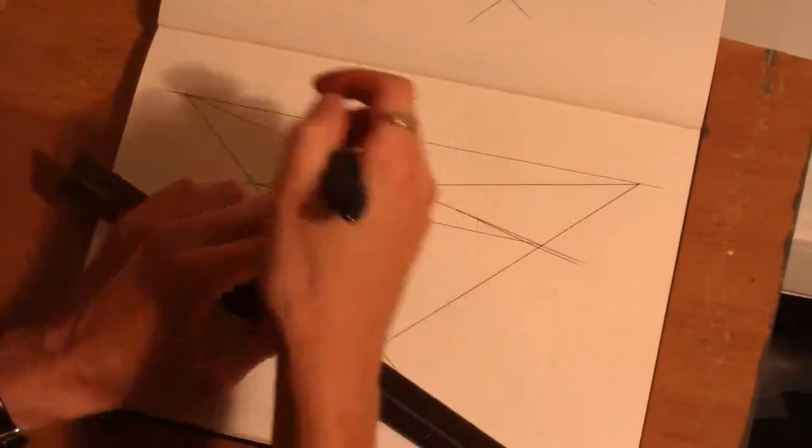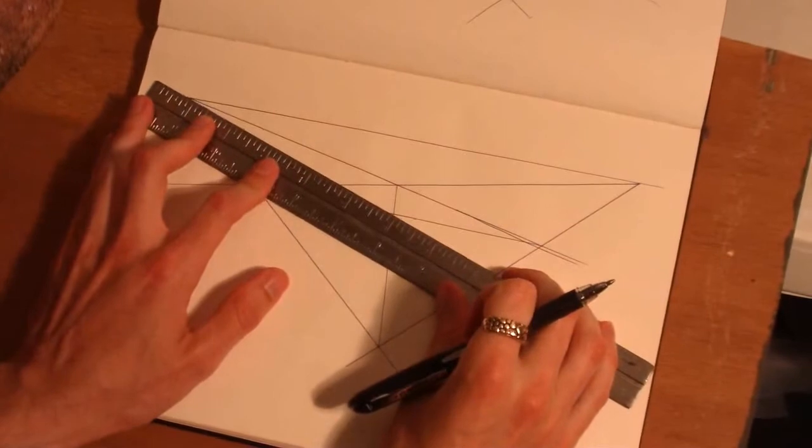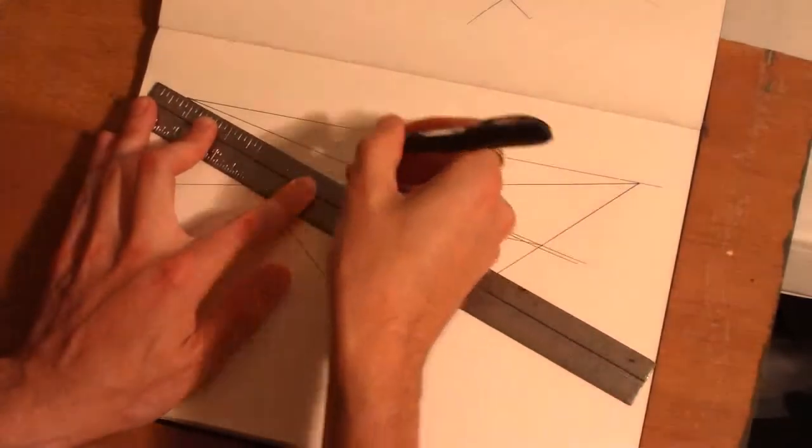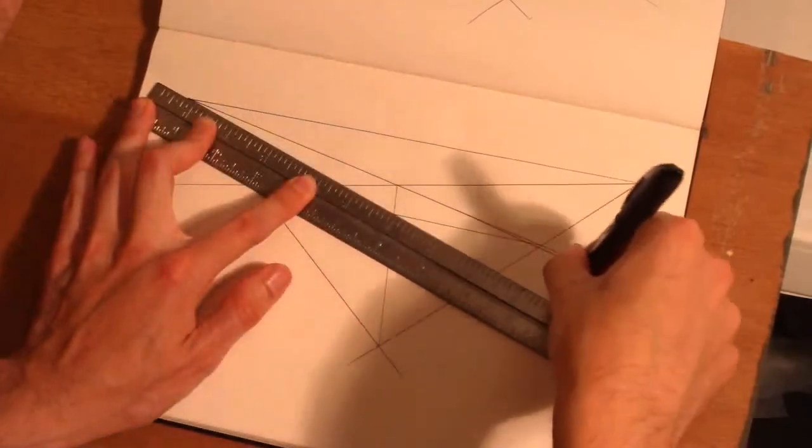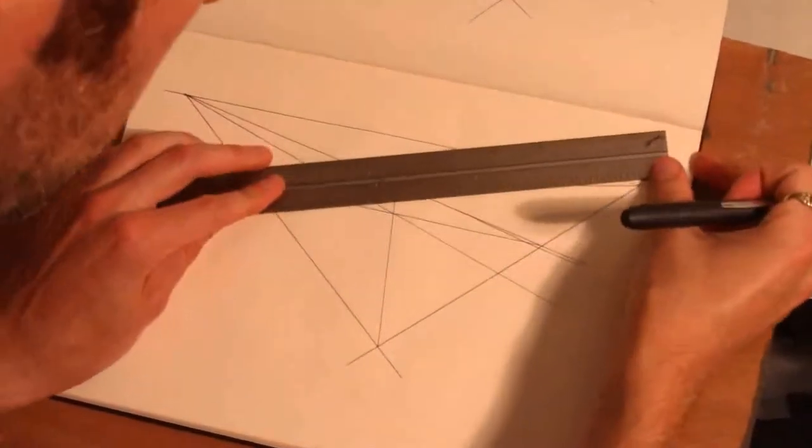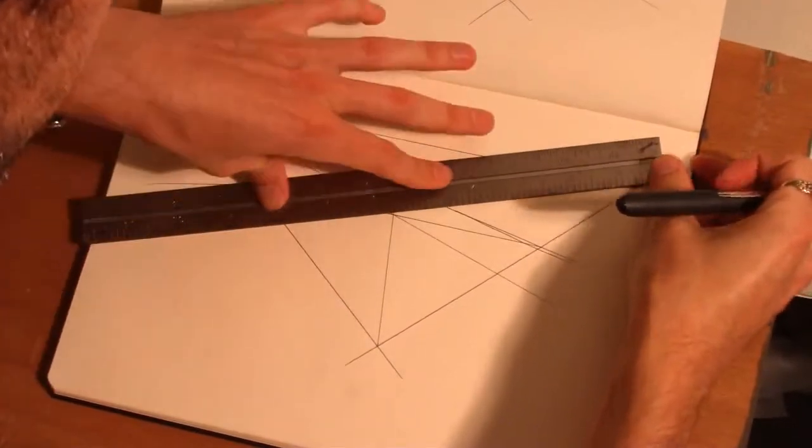This defines our center from both vanishing points. So we're actually going to pull this off of both vanishing points and go right through the center of that. One. And two.